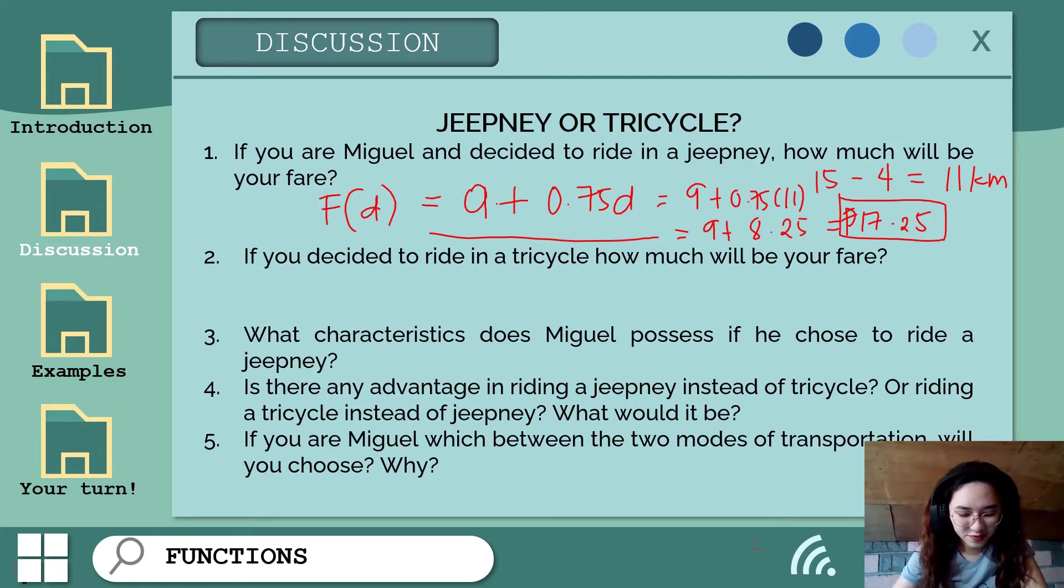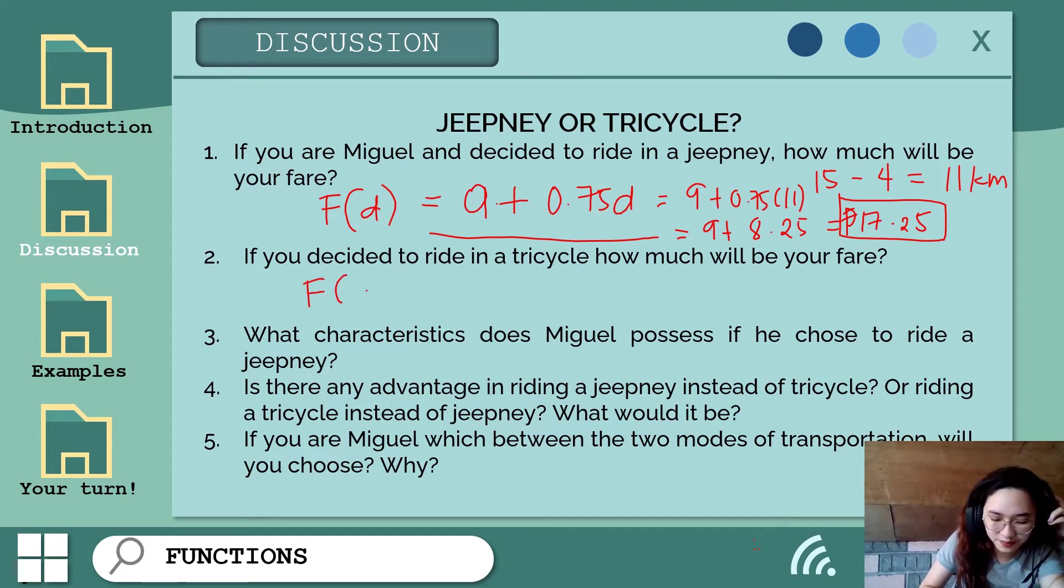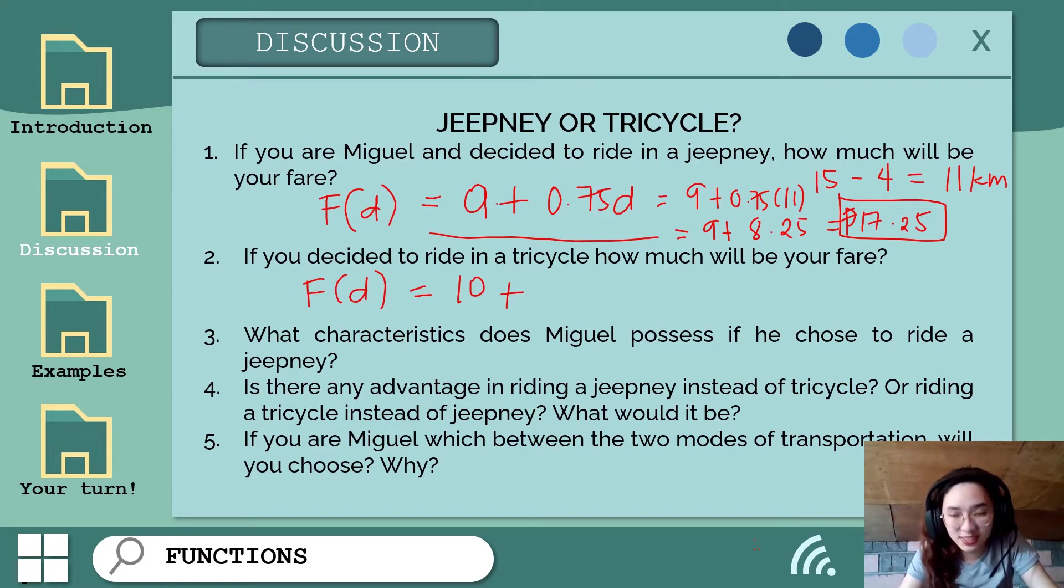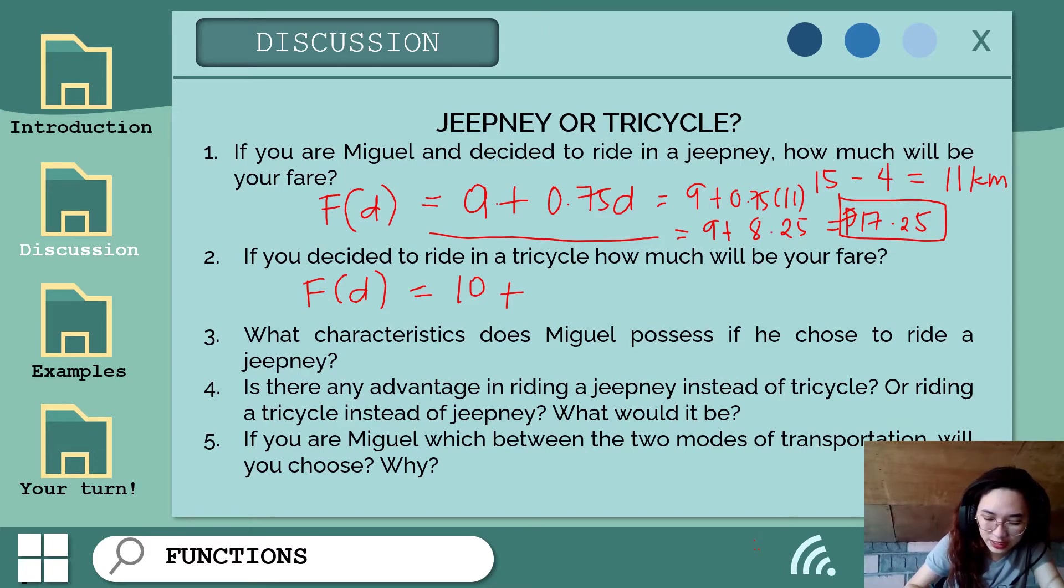On the other hand, if you decided to ride in a tricycle, how much is your fare? The fare in tricycle is 10 pesos for the first kilometer, then after first kilometer, you pay 1 peso per kilometer. Let's represent that situation using a function. F(d) equals the fare, wherein D is the distance traveled after first kilometer. That will be 10 pesos plus 1 peso times D, where D is the distance traveled after first kilometer.